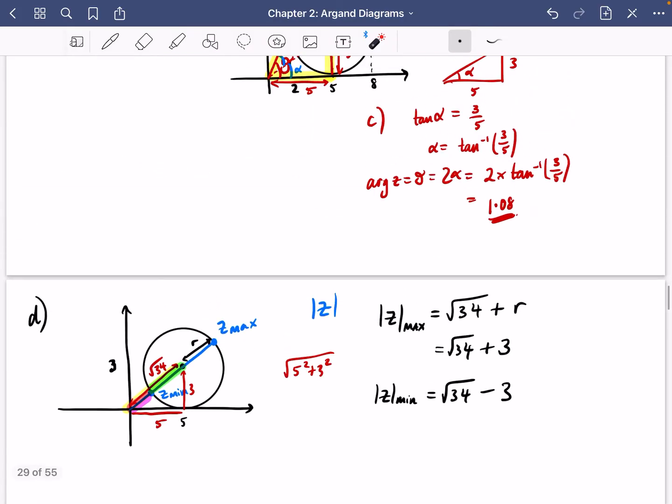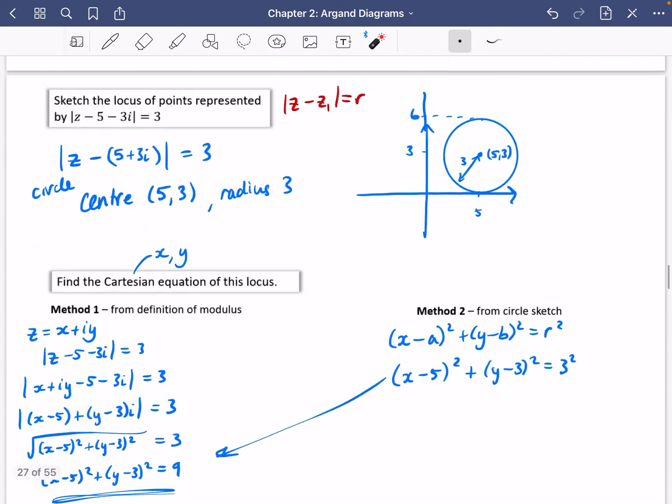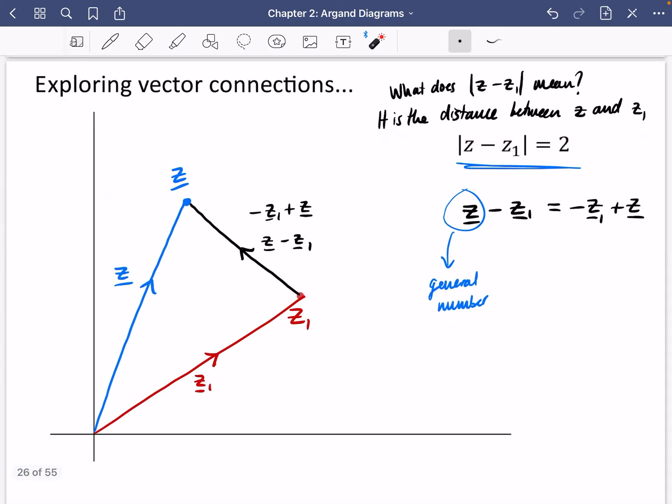When we explored some vector connections and were looking at circles, we came up with this idea that the modulus of z minus z1 was the distance between some varying number z and some fixed complex number z1. It was representing the distance between the two points.